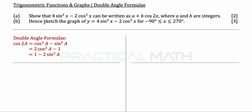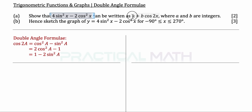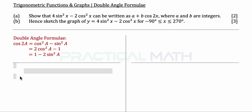In part B, we are to sketch the graph of y equals 4sin²x minus 2cos²x. Since this equation is the same as the expression from part A, the question essentially wants us to sketch a cosine curve. So let us first revise the default shape of a cosine curve. We are going to look at y equals a·cos(bx) + c, for x from 0 degrees to 360 degrees.